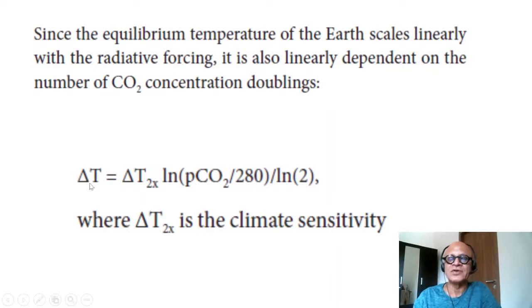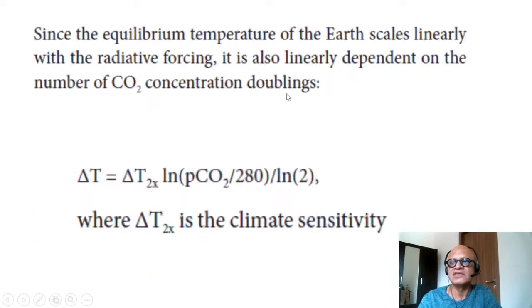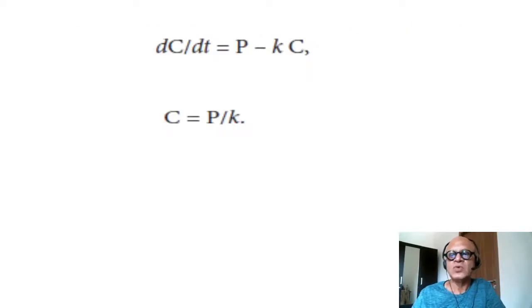So the temperature change in terms of climate sensitivity then would be ΔT2x—where this is the climate sensitivity of doubling CO2—times natural log of pCO2 divided by 280, divided by log 2. So that's the simple conversion from radiative forcing to warming based on this linear dependence on cumulative CO2.